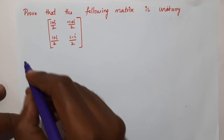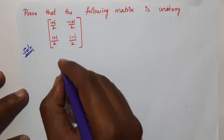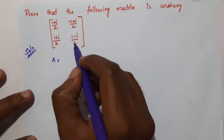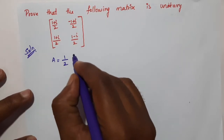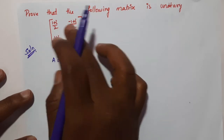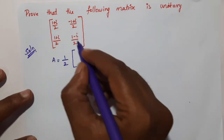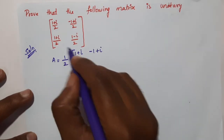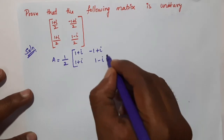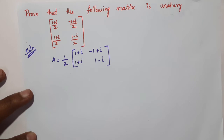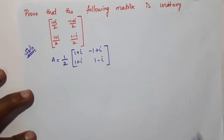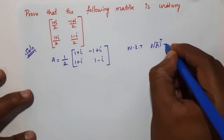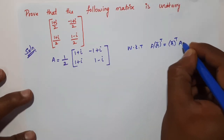For the solution, the denominator has 2, so we factor out 1/2. We know that A·Ā^T = Ā^T·A = I is the condition for a unitary matrix.